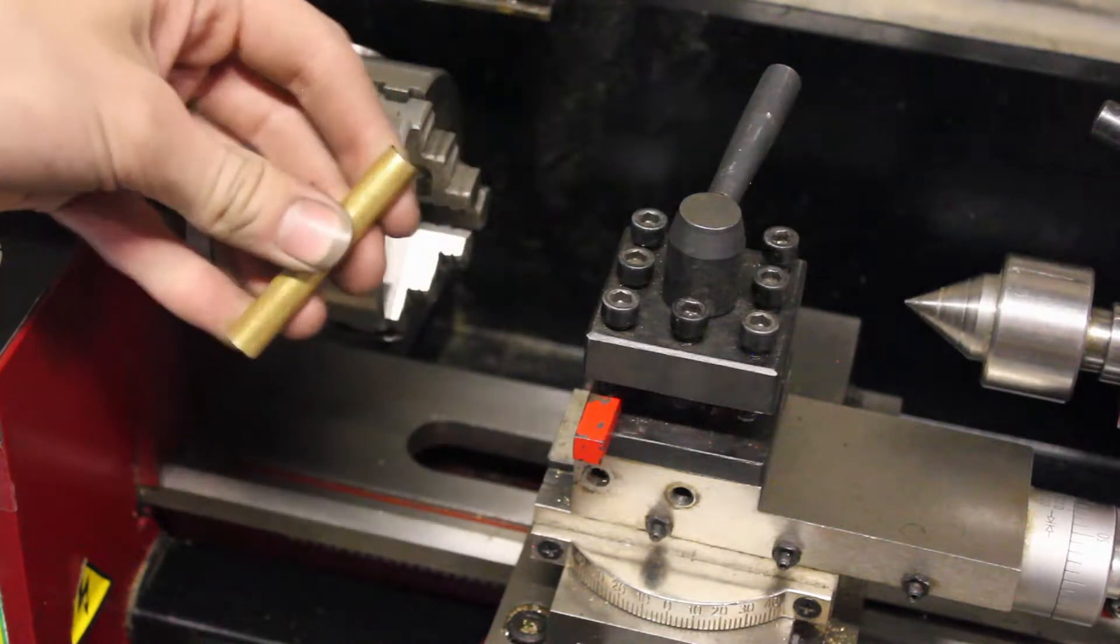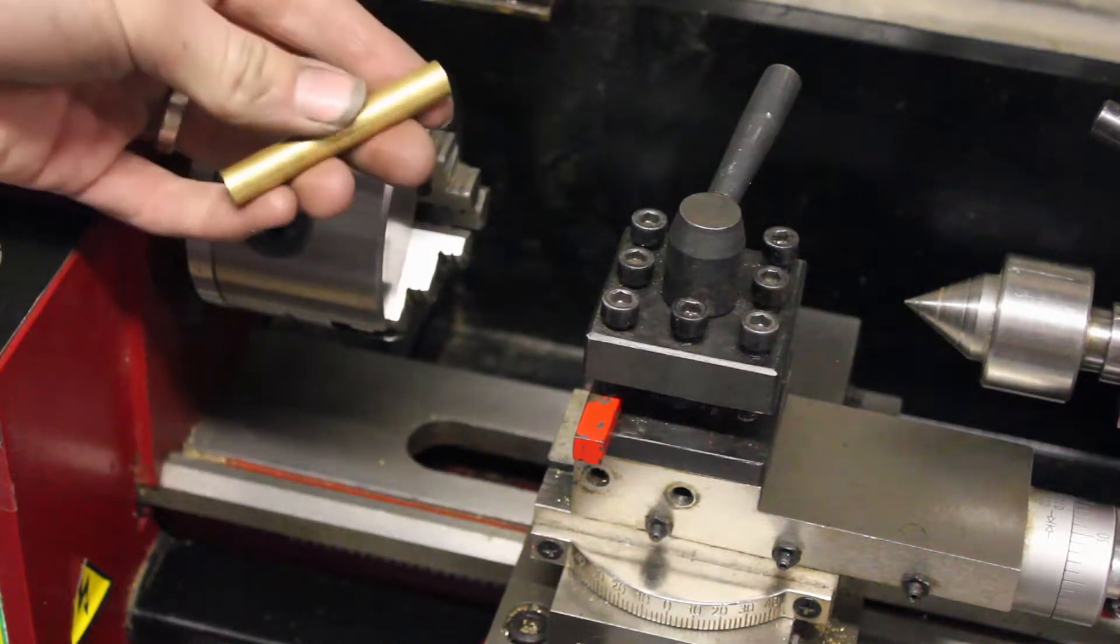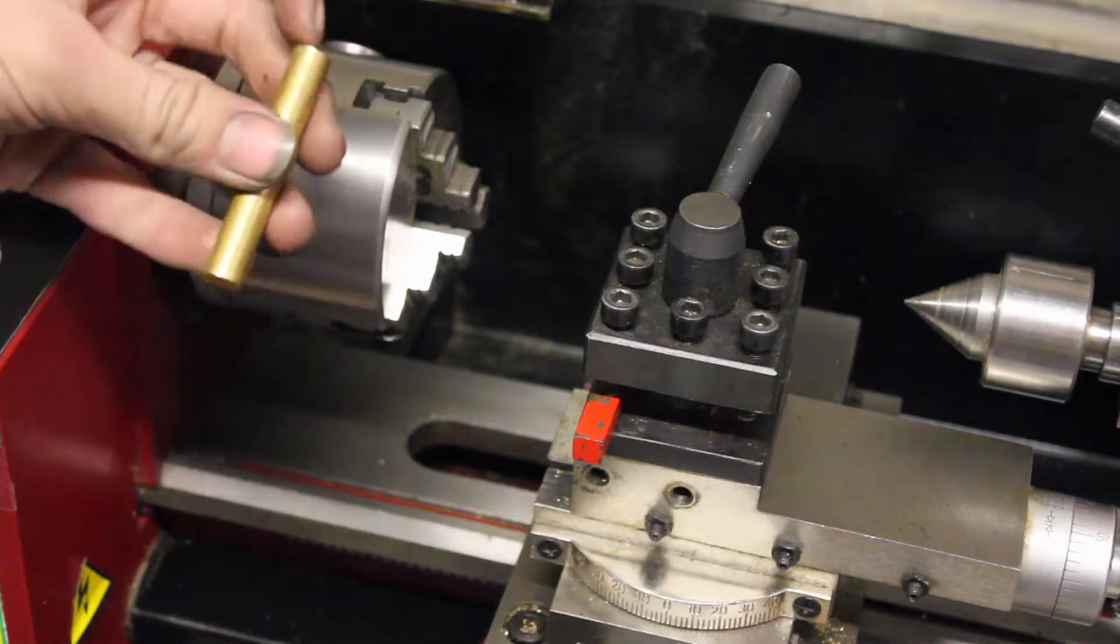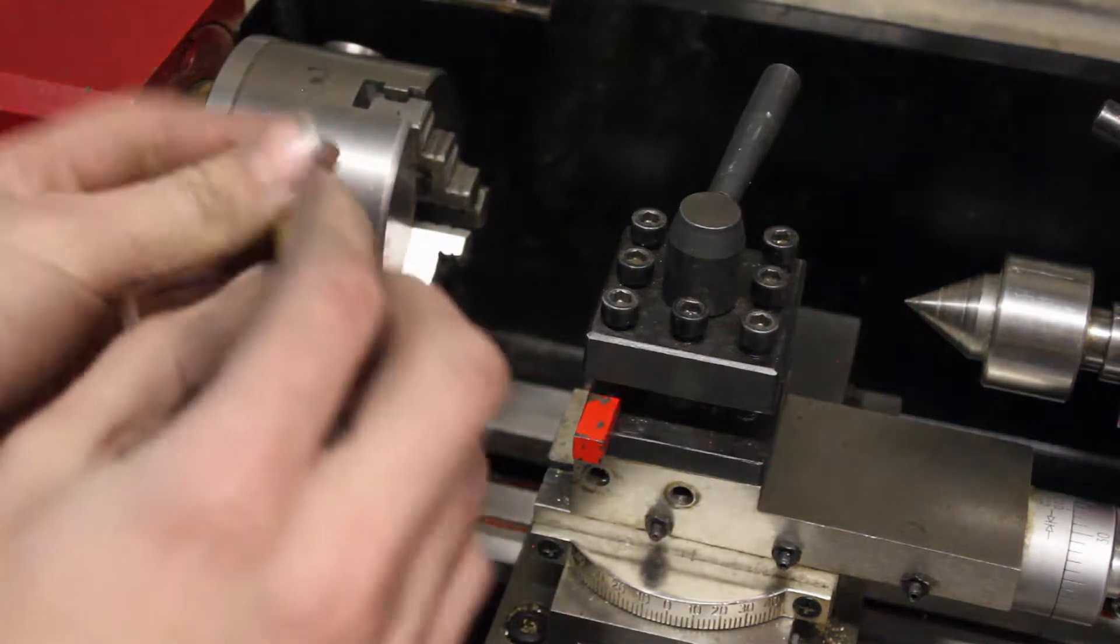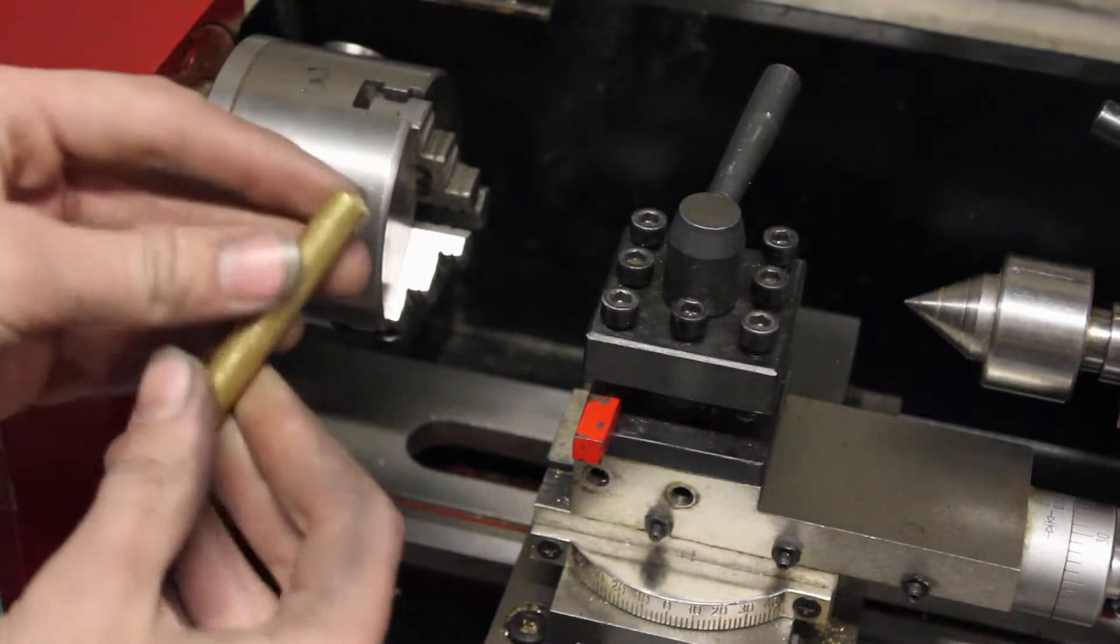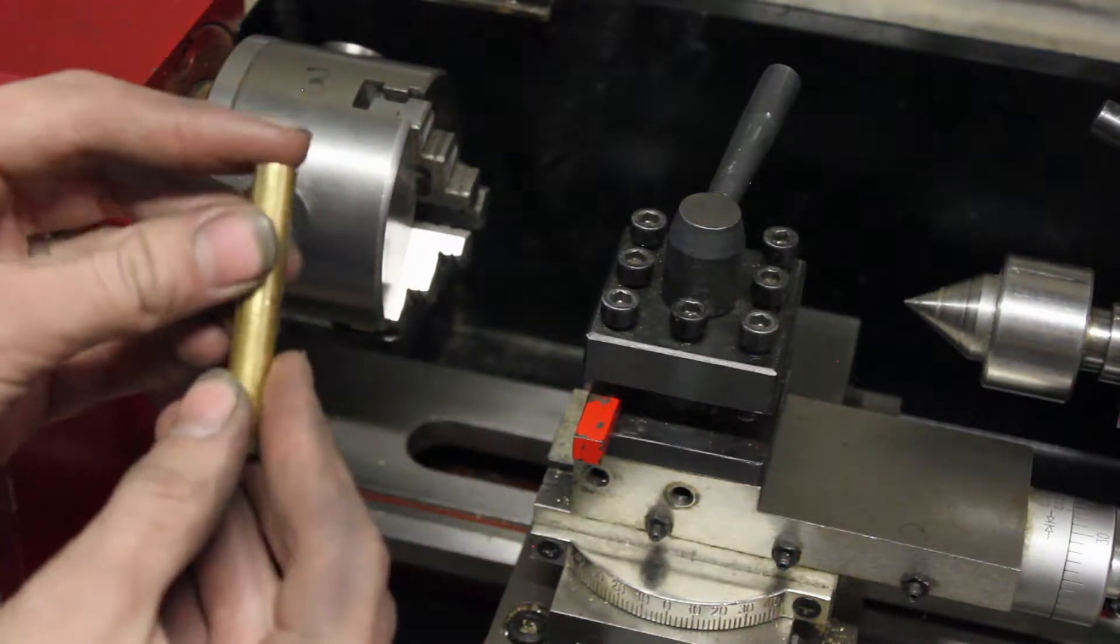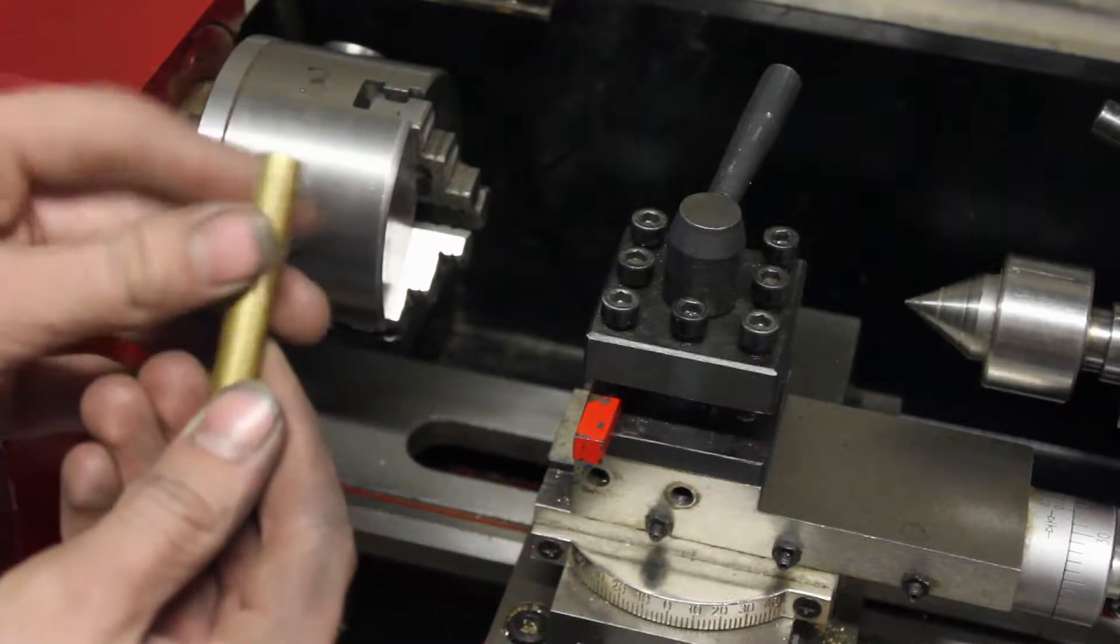So here's the piece of material I'm going to be facing. It's just some brass round stock. Basically, there are rough marks from the saw that cut this piece of brass off. Some of the parts are like burrs, they're kind of sharp.